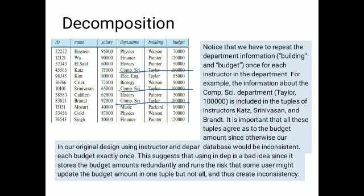Now, what exactly is decomposition? For example, in one given relation, there are three employees working in the computer science department — their names are Katz, Srinivasan, and Wu. All three work in the computer science department, which is located in building Taylor, and the budget of the computer science department is 1 lakh rupees. We notice that we have to repeat the department information — building and budget — once for each instructor in the table.